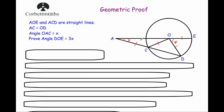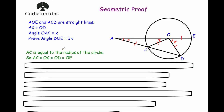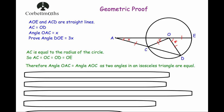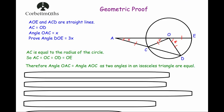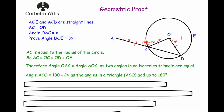Since angle OAC equals x and triangle OAC is isosceles, AC equals the radius of the circle, so AC equals OC, OD and OE. Therefore angle OAC equals angle AOC because the two base angles of an isosceles triangle are equal — so angle AOC also equals x. To find the third angle in the triangle we take 2x away from 180 degrees, giving 180 degrees minus 2x. So angle ACO equals 180 degrees minus 2x, as the angles in a triangle add up to 180 degrees.